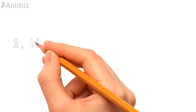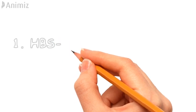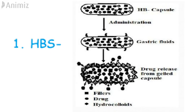The first type of non-effervescent system is the hydrodynamically balanced system. It is a capsule in which the drug is filled with hydrocolloids such as HPMC or HEC. Upon administration, the outer shell of the capsule dissolves and the mixture swells and forms a gelatinous barrier, thereby remaining buoyant in the gastric juice for an extended period of time.